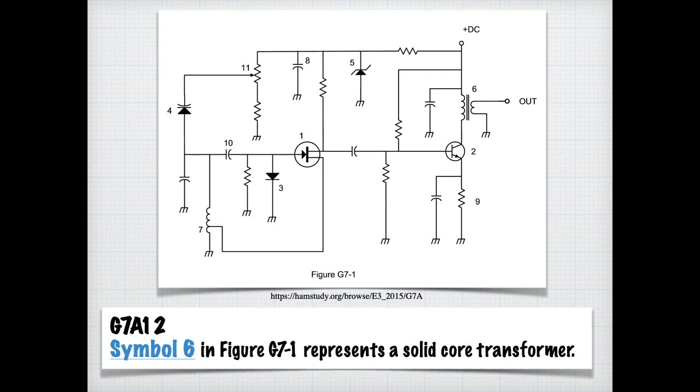And you'll notice that figure 6 or symbol 6 in this schematic, the transformer has two lines in the middle, which means that it has a solid core. So for the exam, just know that symbol 6 in the figure G7-1 represents a solid core transformer.